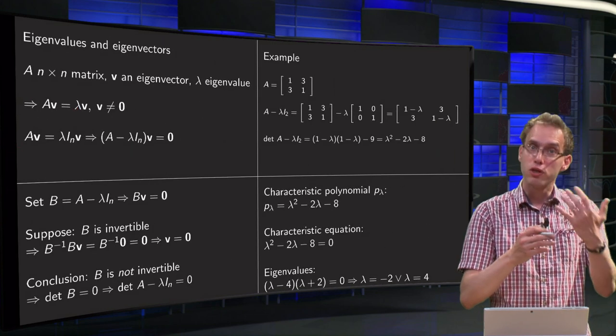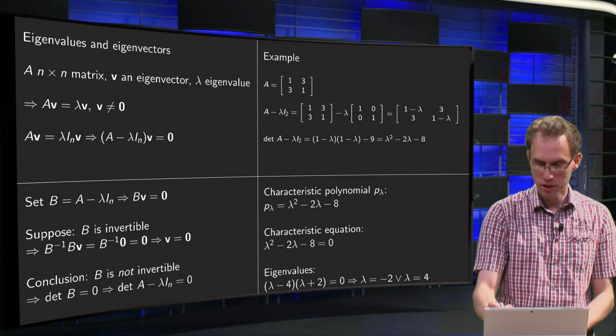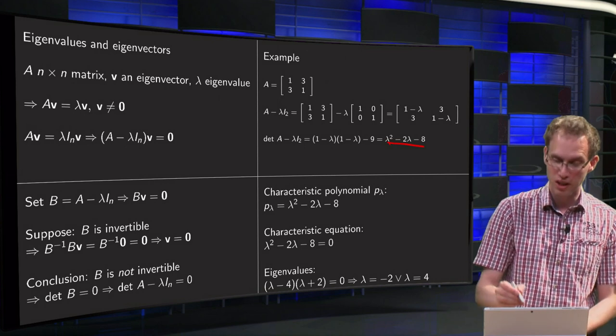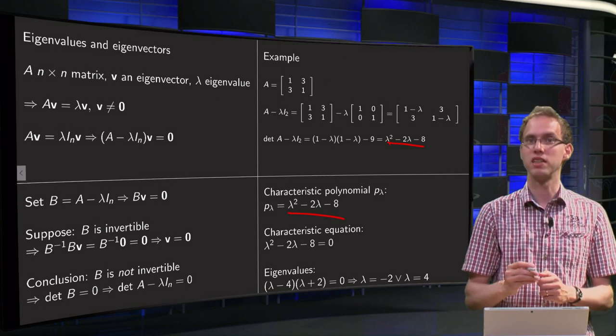Now we will introduce several names. This polynomial you will get, the determinant of A minus lambda times identity matrix, is called the characteristic polynomial of the matrix, pi lambda.